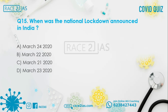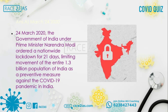Question number 15: When was the national lockdown announced in India? Option A: March 24, 2020. Option B: March 22. Option C: March 21. Option D: March 23. The right answer is 24th March 2020. On 24th March 2020, the Government of India under Prime Minister Narendra Modi ordered a nationwide lockdown for 21 days, limiting movement of the entire 1.3 billion population of India as a preventive measure against the COVID-19 pandemic.